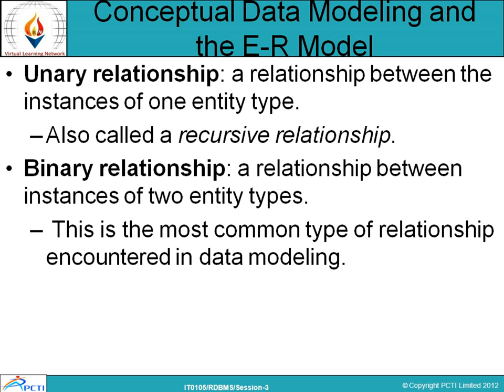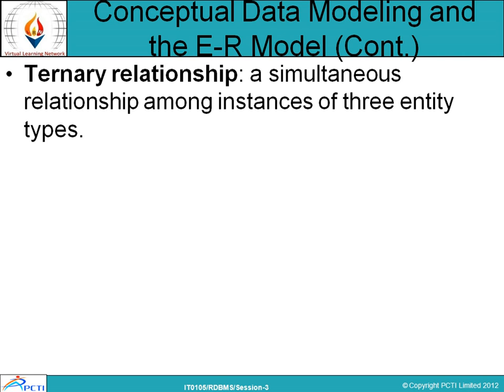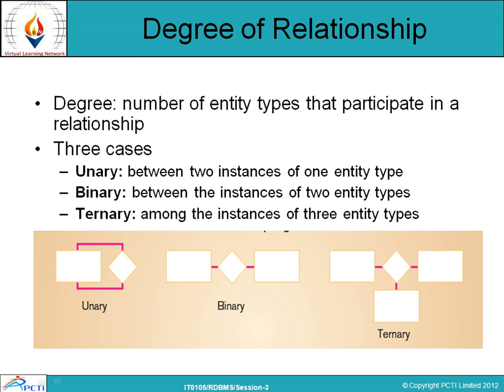In conceptual data modeling and the ER model there are three relationship types. A unary relationship is a relationship between instances of one entity type, also called a recursive relationship. A binary relationship exists between two entity types and is the most common type encountered in data modeling. A ternary relationship is a simultaneous relationship among instances of three entity types. The diagram illustrates unary linking an entity back to itself, binary linking two entities, and ternary linking three entities.